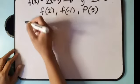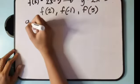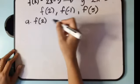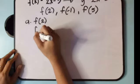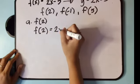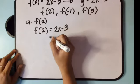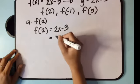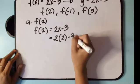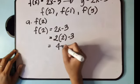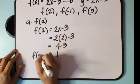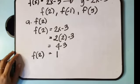For letter A, f of 2: f of 2 is equal to 2x minus 3, so that is 2 times 2 minus 3, which is 4 minus 3, that is 1. So f of 2 is equal to 1.